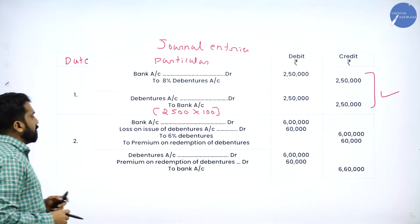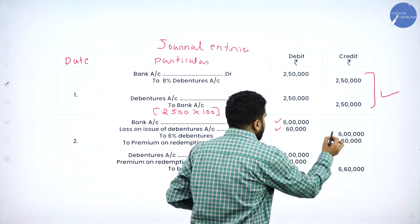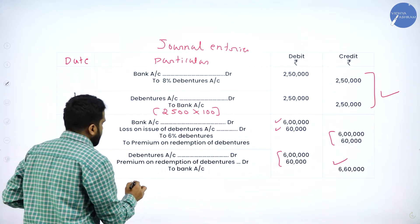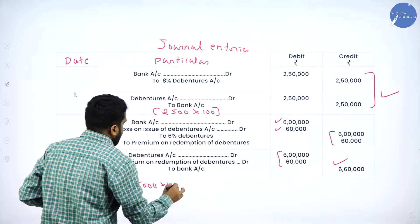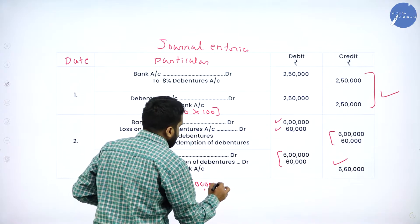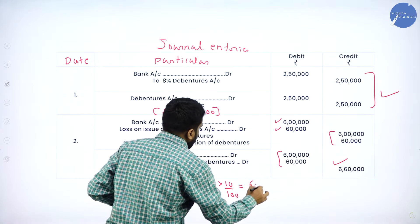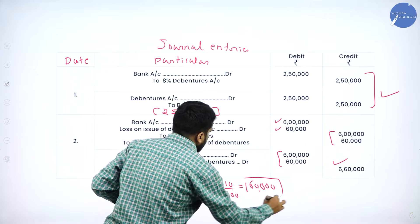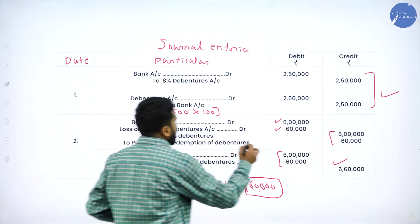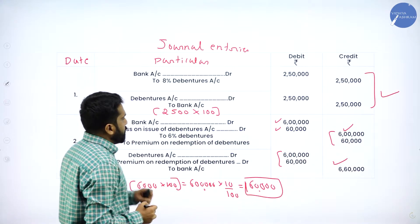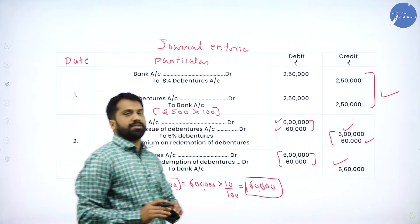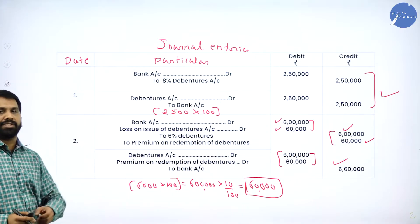For the second statement, the debenture value is 6 lakh. What is the premium percentage? 10%. So 10 divided by 100 multiplied by 6 lakh gives a premium of 60,000. This is the working note for your second statement. So debenture is 6 lakh and premium is 60,000, making the total 6 lakh 60,000. Easy calculation, but you need to remember these journal entries.